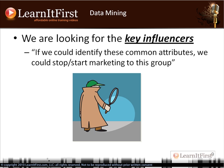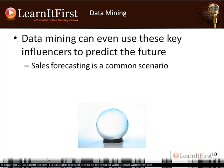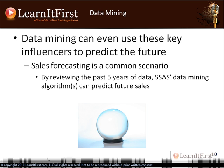If we can identify the common attributes of people with a bad credit risk, we can stop marketing to them — or start marketing to them if our product can help them. Data mining also allows us to do predictions and forecasting. We can run scenarios, change a few variables, tweak it up, run a new scenario — will this improve our bottom line? Sales forecasting and any sort of forecasting can be greatly improved by data mining.